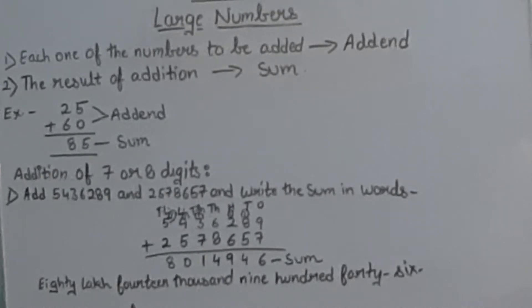Let's take one example: 25 plus 60. So 25 and 60 are addends because we have to add these two numbers. The answer we get after adding these two numbers is 85, so 85 is the sum.